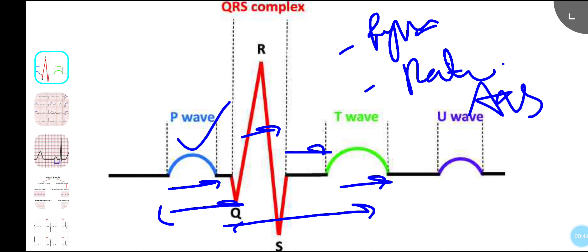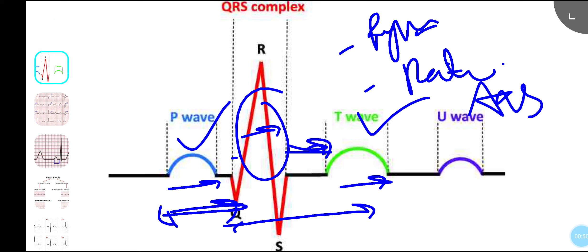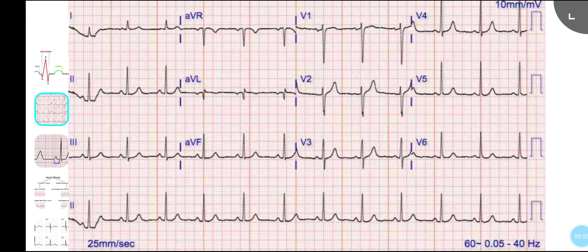So in order: rhythm, rate, axis, P wave, PR interval, QRS, ST, T wave, and QT. Whenever you have an ECG, first confirm the patient's name to make sure you are reading the correct person's ECG. Then check that the ECG is run at 25 mm per second — that's the standard rate — and the calibration is 10 millivolts.